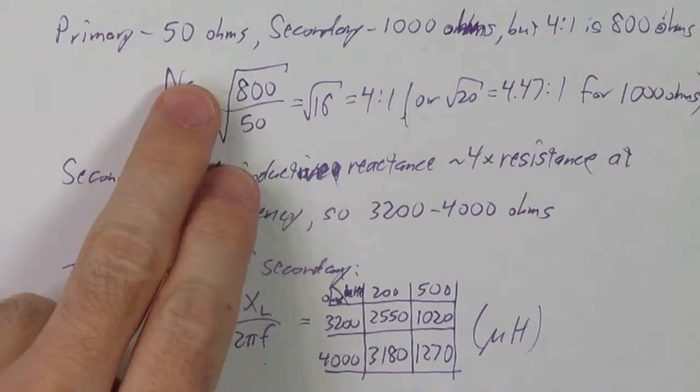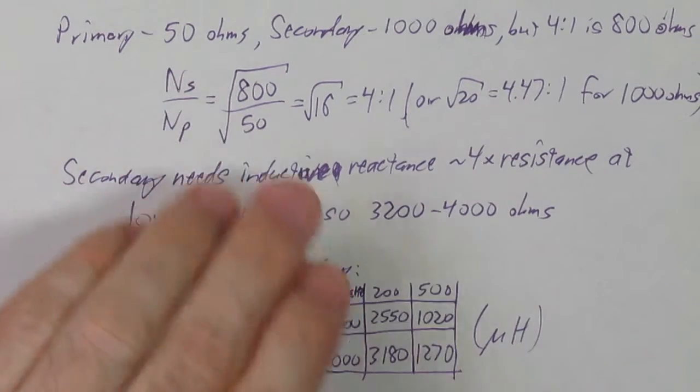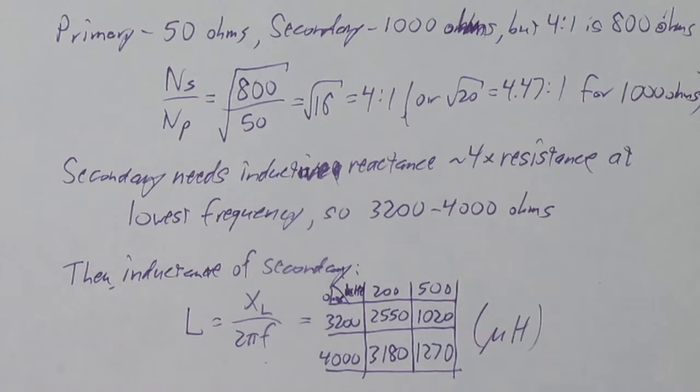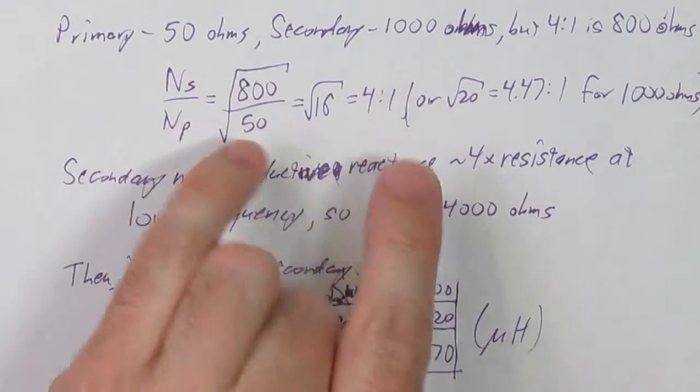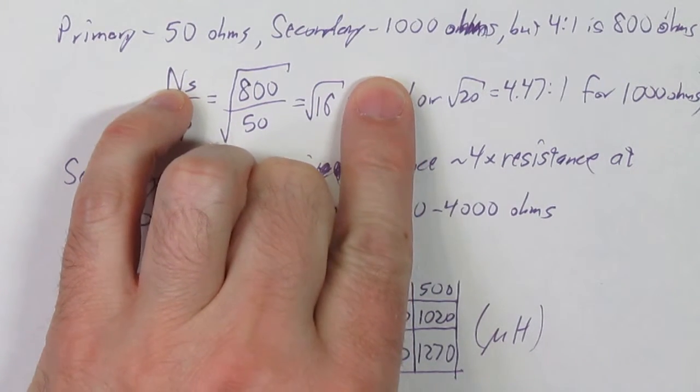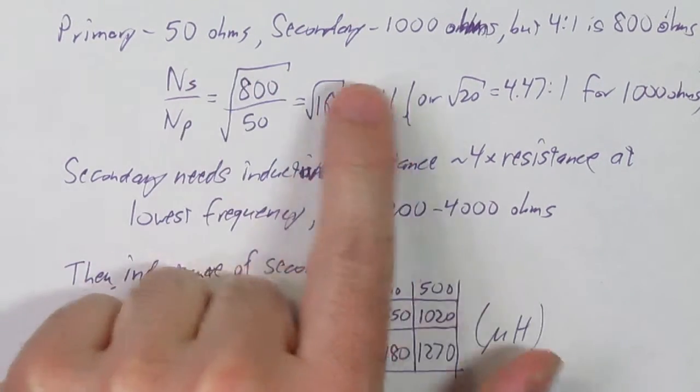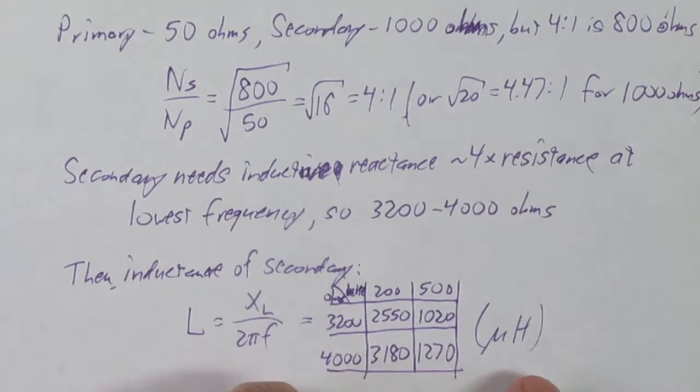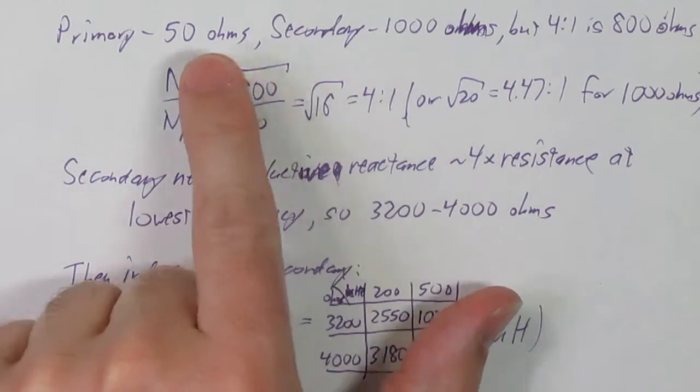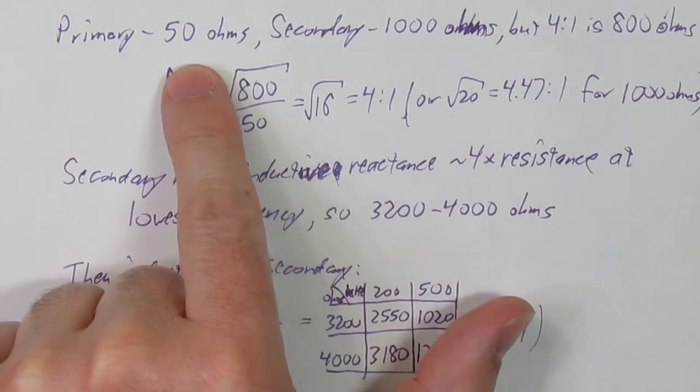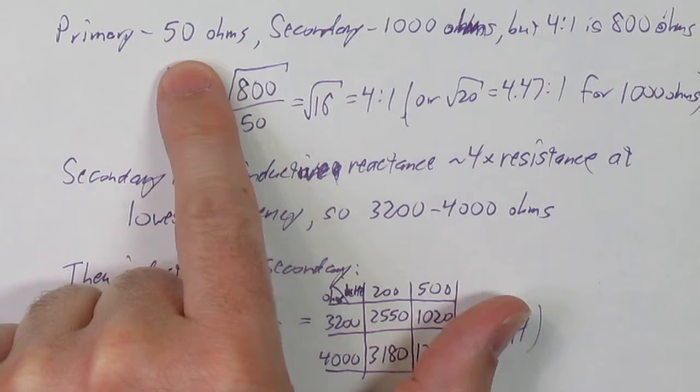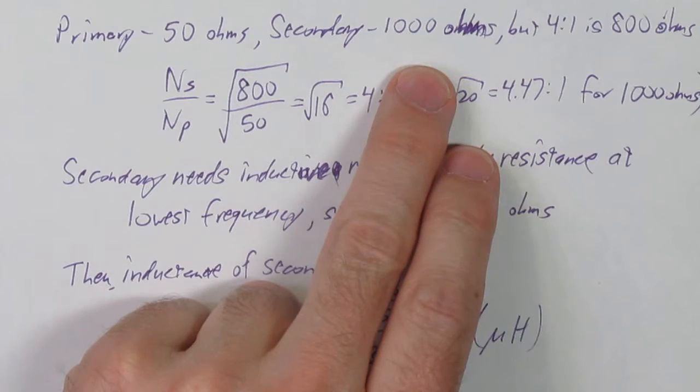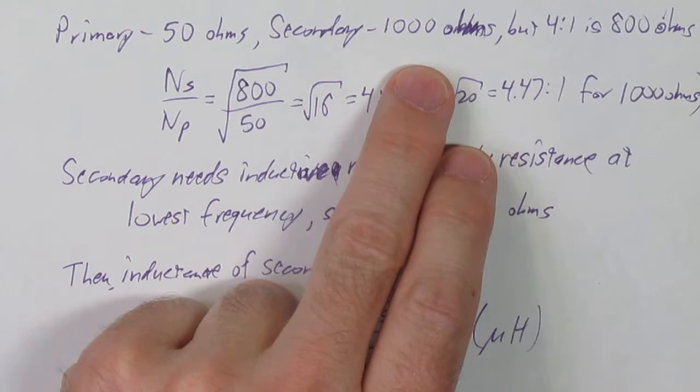Alright, so we have to get this AC signal from the loop antenna to the radio. And the problem is that the antenna and the feed line have very different impedances. Now, impedance is just the AC version of resistance, so it's measured in ohms. So the normal cables you use for radio antennas are 50 ohms.